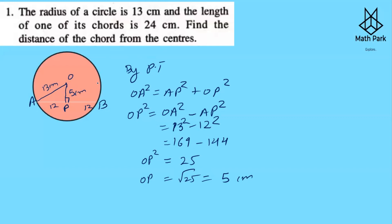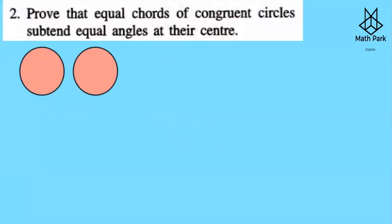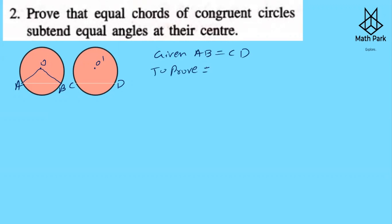Question 2: Prove that equal chords of congruent circles subtend equal angles. Take chord AB of one circle with center O, and chord CD of another congruent circle with center O'. Congruent circles have equal radii. Given AB = CD, we need to prove angle AOB = angle CO'D. We prove the two triangles congruent.